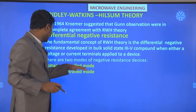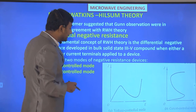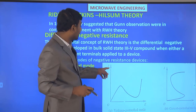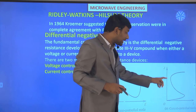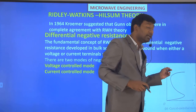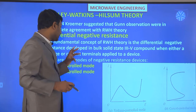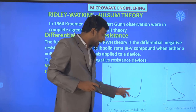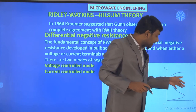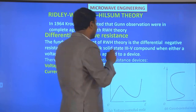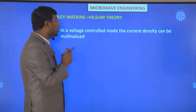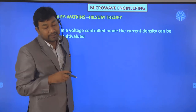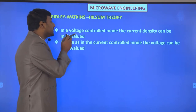There are two modes of negative resistance devices: voltage control mode and current control mode. In voltage control mode the J versus E diagram has a specific shape, and in current control mode the diagram differs. In voltage control mode, current density can be multivalent, while in current control mode the voltage can be multivalent.